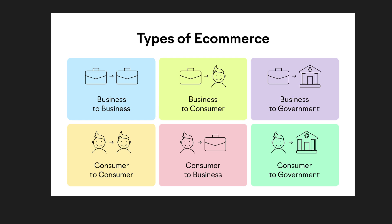Some businesses operate across multiple models — like Amazon, which serves both B2C retail customers and B2B wholesale suppliers. With digital transformation, new models such as subscription-based e-commerce and drop shipping are gaining popularity. Understanding these models helps businesses choose the right approach for growth and profitability. Factors like target audience, product type, scalability, and technology adoption influence model selection, and advancements in AI, blockchain, and big data are further reshaping traditional e-commerce business models.